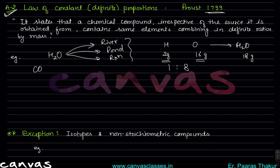Similarly, take carbon dioxide from anywhere — the ratio in which carbon and oxygen combine is fixed. It is not the case that sometimes carbon is more and oxygen is less. This is the law of constant proportion: a chemical compound, irrespective of the source it is obtained from, contains the same elements combining in definite ratios by mass.